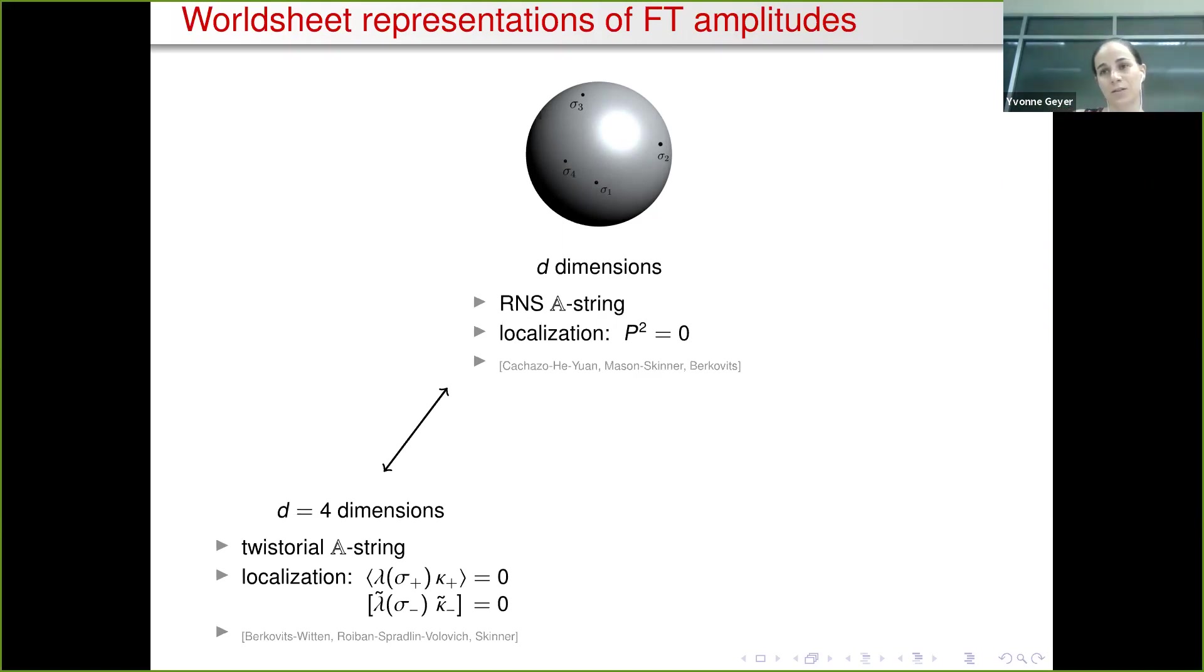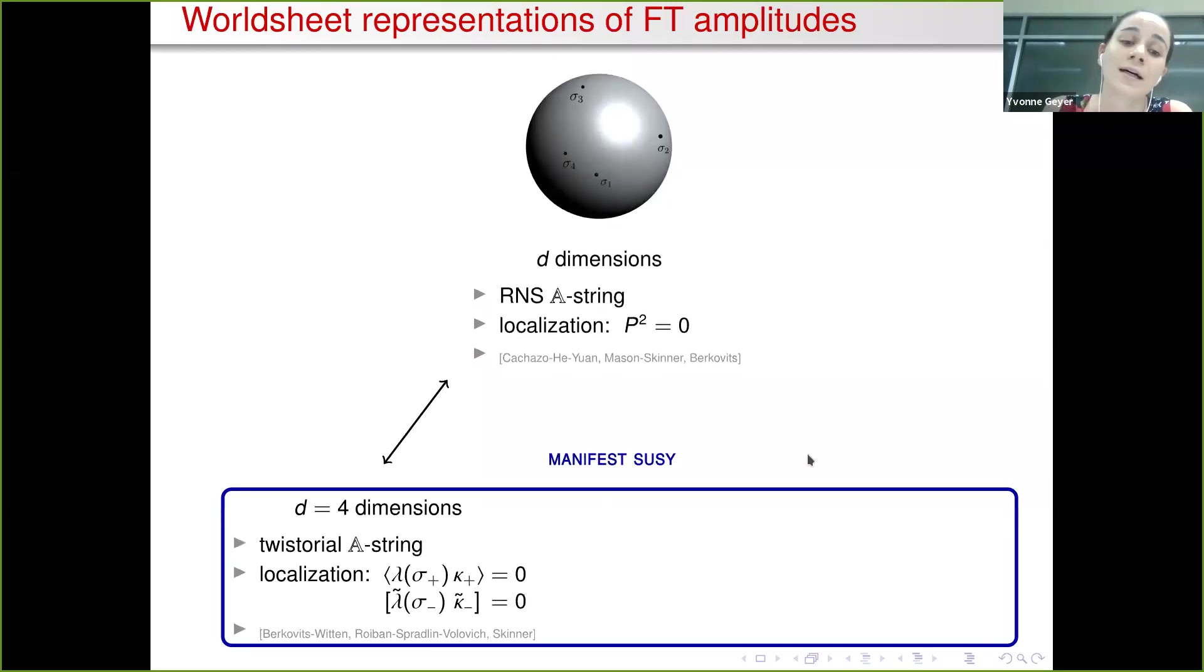That leads us naturally to the question: is this twistorial representation that has a lot of things going for it - for example it's manifestly supersymmetric - does this only happen in four and ten dimensions or are there nice descriptions in other dimensions? What I want to talk about today is what happens in five and six dimensions. What we'll see is that there is an intuitively quite similar ambitwister string model, and we'll see what is special about six and five dimensions that makes this work nicely.